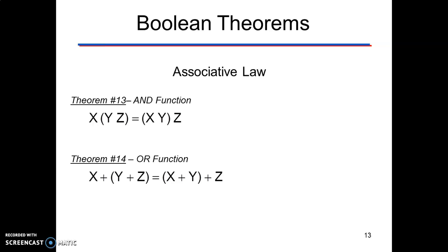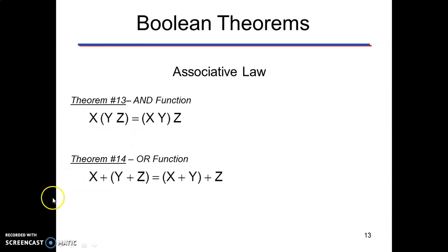Next, the associative property. The associative law for multiplication states that x·(y·z) = (x·y)·z — it makes no difference in what order variables are grouped during the AND operation of several variables. The same holds for the OR operation: x+(y+z) = (x+y)+z.